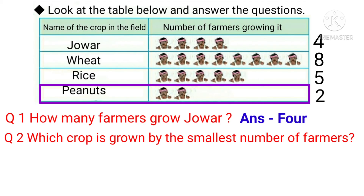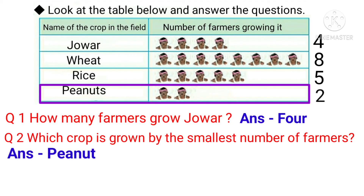If we look carefully, from 4, 8, 5 and 2, the number 2 is the smallest. So we can say peanut is grown by the smallest number of farmers — just 2 farmers.